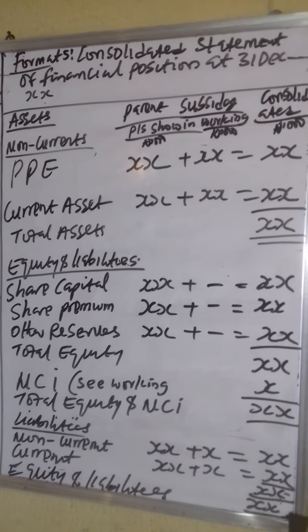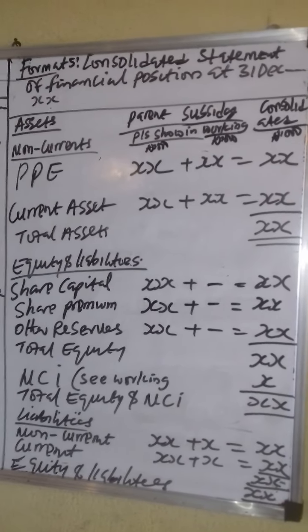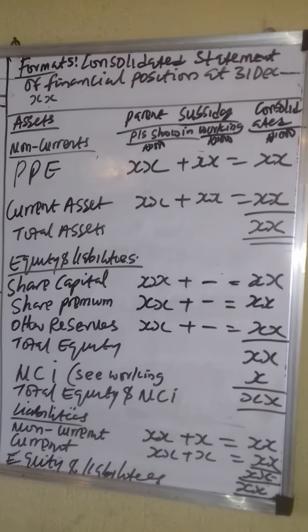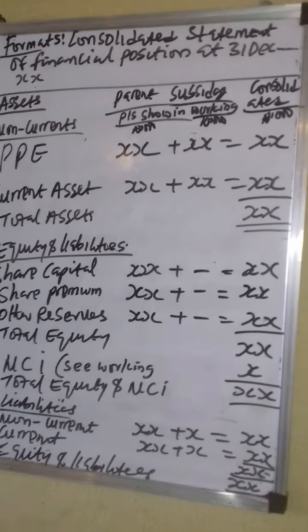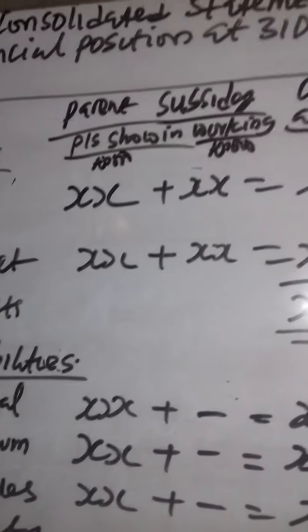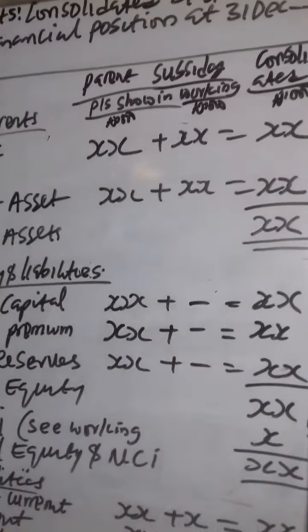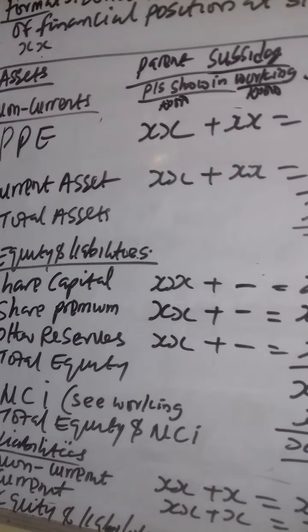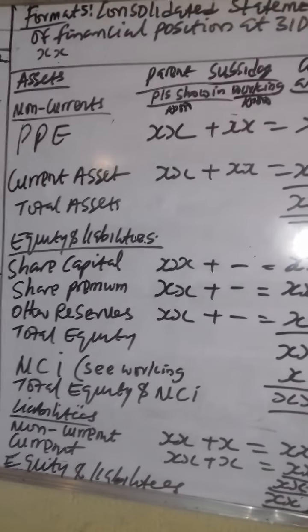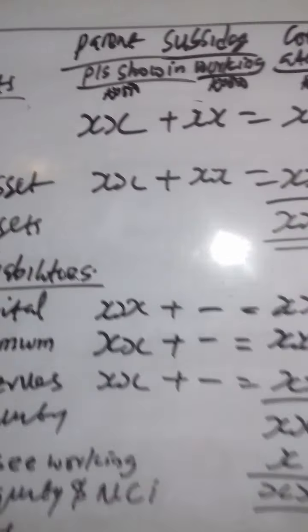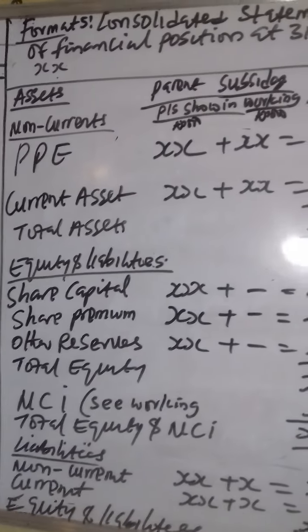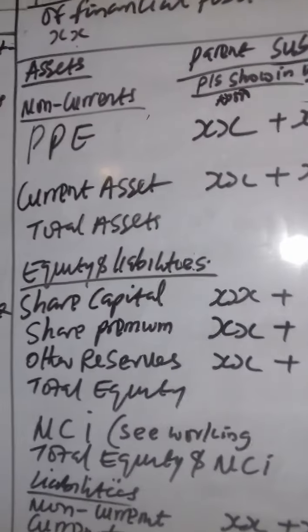Now let's look at how to present our consolidated statement of financial position. The first thing you do is write the name of the company - for example, SSP Consulting Limited or Speedy Success Professional. Write the name of the account or statement you are presenting. Candidates should put parent and subsidiary workings on a working sheet, and on the final presentation page, if you have seen any published financial statement, you will not see such workings there. Pick this format as it is, take it to a working page, remove the working part, and keep only the consolidated value on your final presentation.